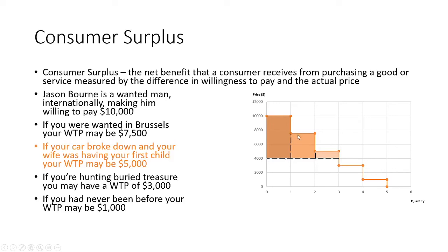The next person who's wanted in Brussels would have a difference of $7,500 and $4,000, so he would have $3,500. And this person whose car broke down would now be able to get to Paris and would have a $1,000 consumer surplus.